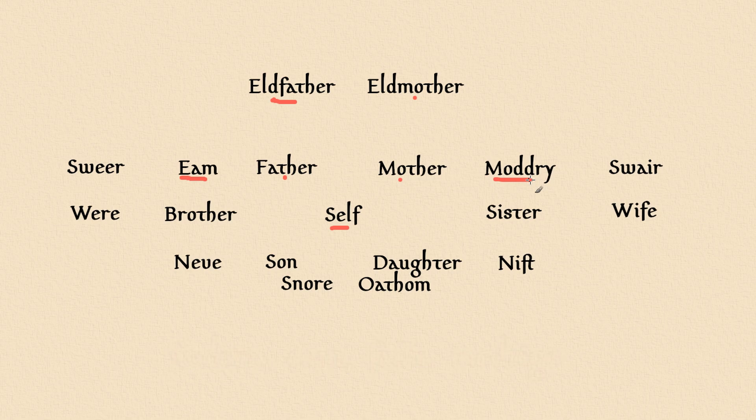In Middle English, only two of these terms survived and then they took over the roles of the previous words which existed and then died. So eem and madri can now refer to maternal or paternal.